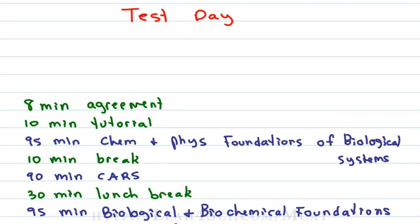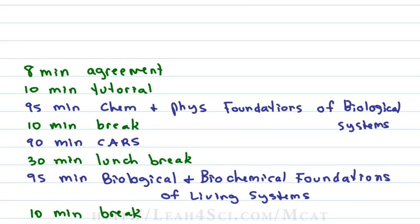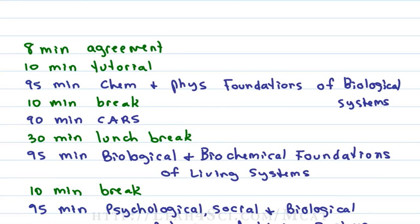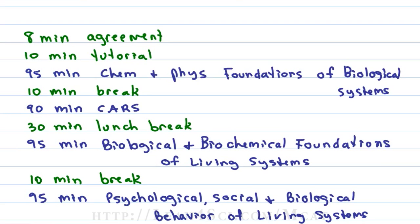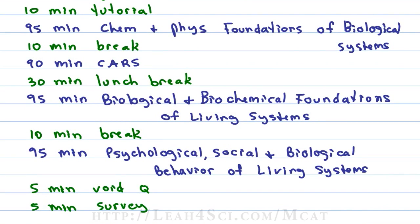Then you'll have 95 minutes for the Biological and Biochemical Foundations of Living Systems, followed by another 10-minute break, and then your final section — 95 minutes for the Psychological, Social, and Biological Foundations of Behavior. But you're not done yet. You'll have 5 minutes to decide if you want to void your exam, meaning you won't receive a score and medical schools won't know you sat for it. But honestly, after seven and a half hours, why wouldn't you see how you did? Finally, you end with a 5-minute survey.